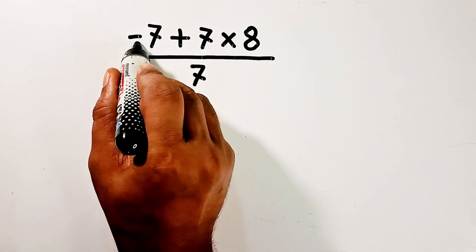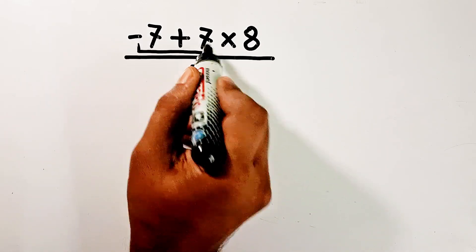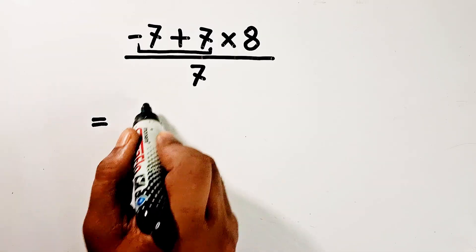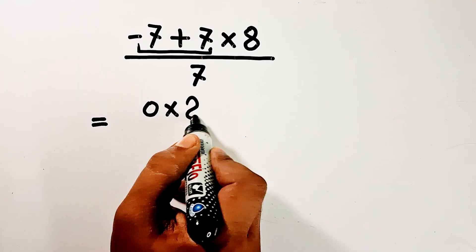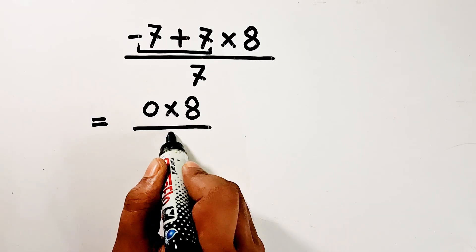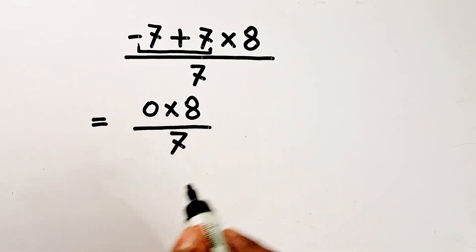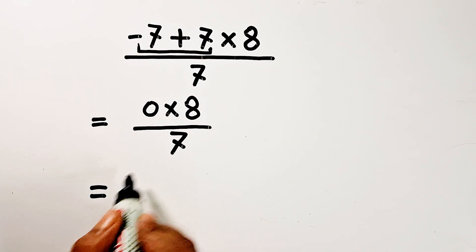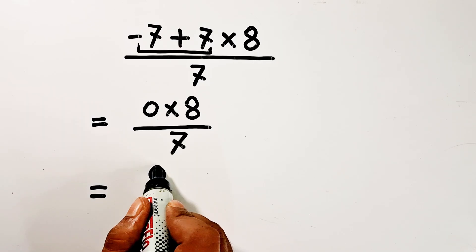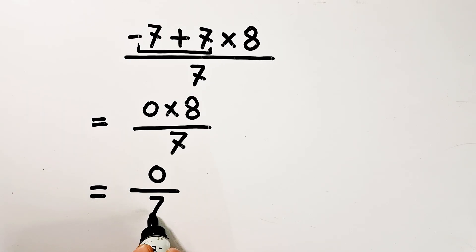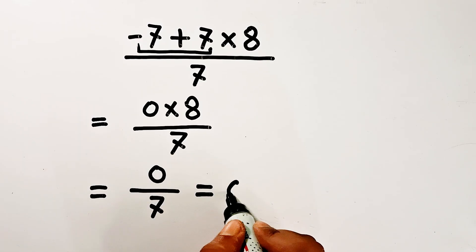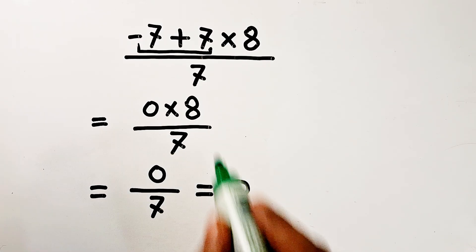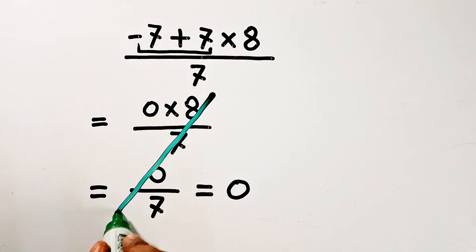Hello guys, we will do another simplification problem. First, minus seven plus seven equals zero, multiply with eight, divided by seven. Zero multiply with eight equals zero, divided by seven. Zero divided by seven equals zero. But it is totally wrong because we didn't follow the PEMDAS or BODMAS rule.